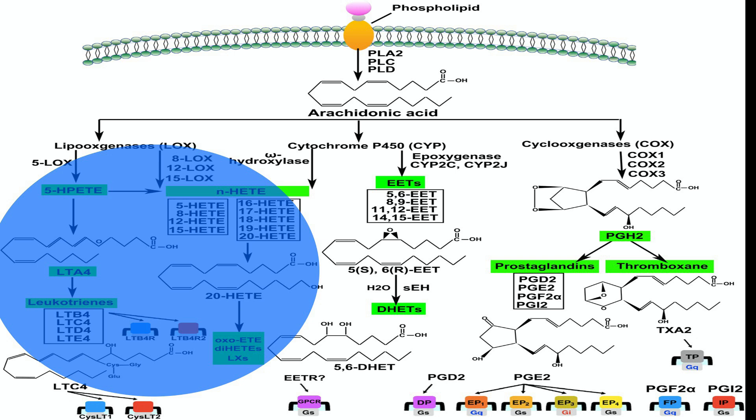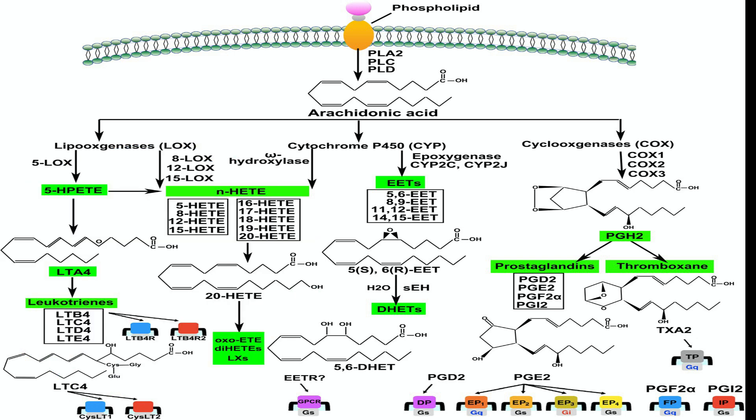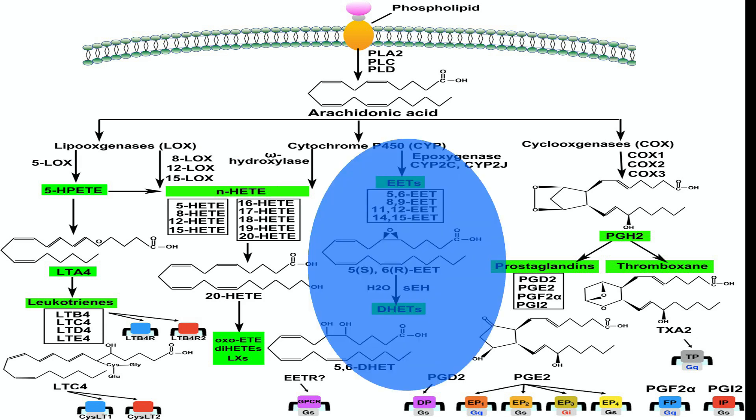The lipoxygenase pathway results in the production of leukotrienes and hydroxyeicosatetraenoic acids (HETEs). These molecules play crucial roles in inflammatory and allergic responses. The cytochrome P450 epoxygenase pathway leads to the formation of epoxyeicosatetraenoic acids (EETs), which are vasodilatory and anti-inflammatory.